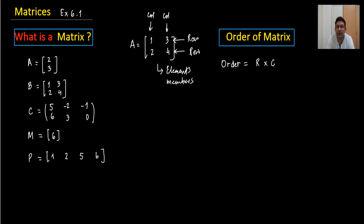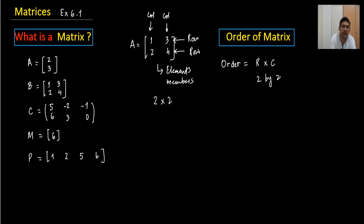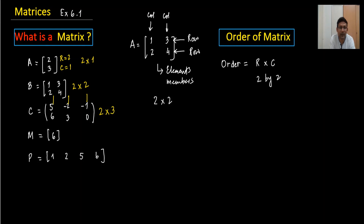For example, if a matrix has two rows and two columns, the order is two by two — write it as 2×2, not just four. For a matrix with two rows and one column, the order is 2×1. For two rows and two columns it's 2×2. For two rows and three columns it's 2×3. For a single element it's 1×1, and for one row with four columns it is 1×4.